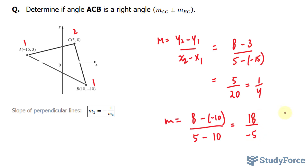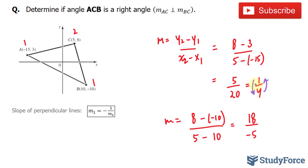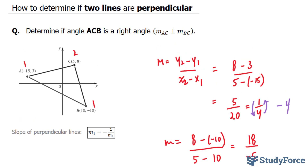Now that we found both slopes — the slope for this line and the slope for this line — take a look at a quarter, this fraction. Let's take the negative reciprocal of this number. That means we flip this fraction and change its sign from positive to negative, and that gives us negative 4. Does negative 4 equal 18 over negative 5? It doesn't. Therefore, these two lines are not perpendicular to one another. And there you have it — that is how to determine if two lines are perpendicular.